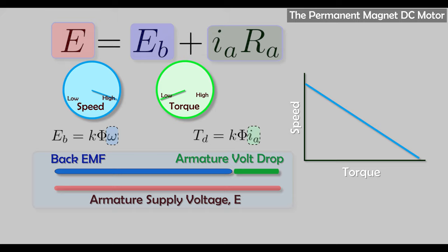The way this problem was solved is with an electronic switch — transistor, thyristor, etc. This acts as a chopper circuit, chopping up the input voltage into pulses. The average value of this new voltage depends on the duty cycle of the pulses, and this method can be easily controlled by turning the electronic switch on and off at the right time using simple electronics. A huge advantage of this method is that it's much more efficient than using a resistor. The voltage waveform is a train of pulses, but the current is much smoother because it's filtered by the inductance of the armature, so the torque is much smoother than you might think, and efficiency is much closer to 100%.